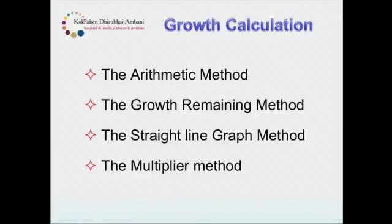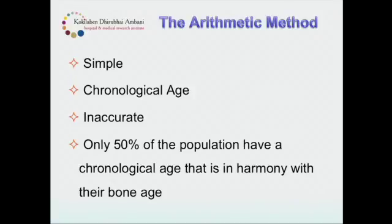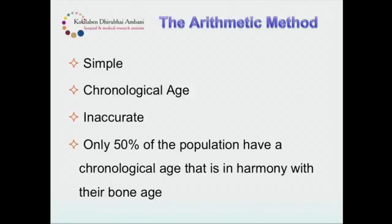There are three or four methods used well in literature, starting with a simple arithmetic method going on to more complex methods. The arithmetic method, used by White and Menelaus, is a simple calculation based on chronological age. Because it's simple, it is the most inaccurate. Less than 50 percent of children have a chronological age in harmony with their skeletal age. When we talk of growth, maturity, and puberty in children, chronological age has the least importance — what matters is the skeletal age, the bone age of the child.